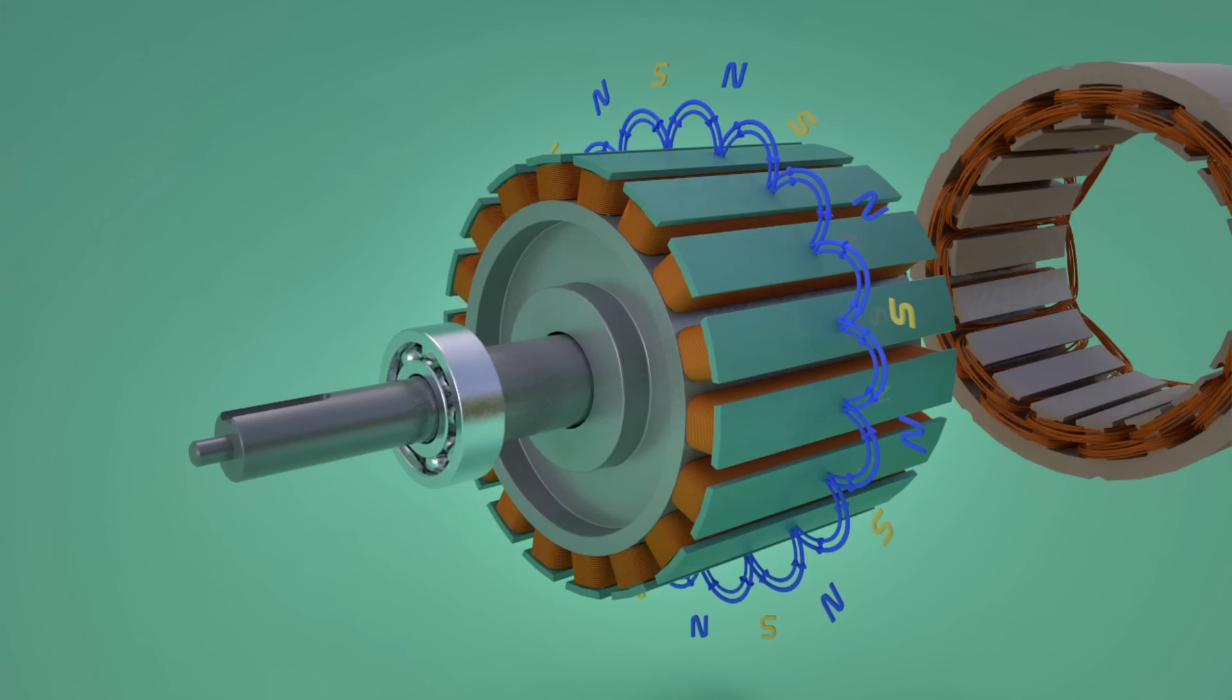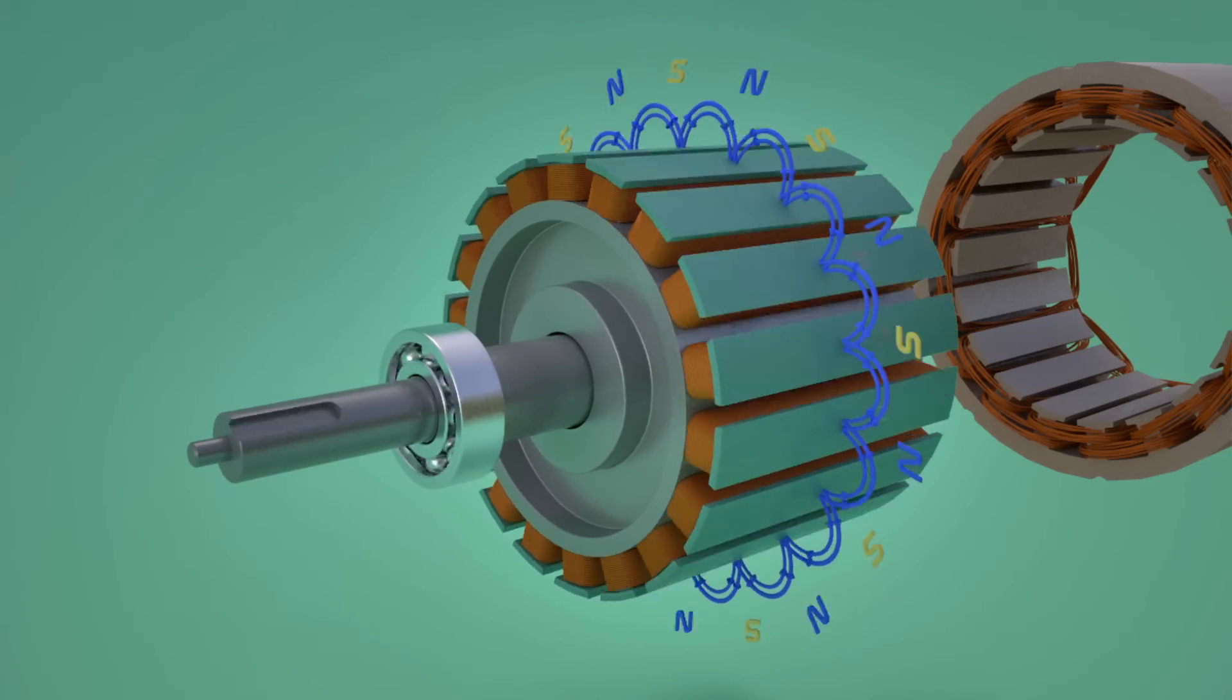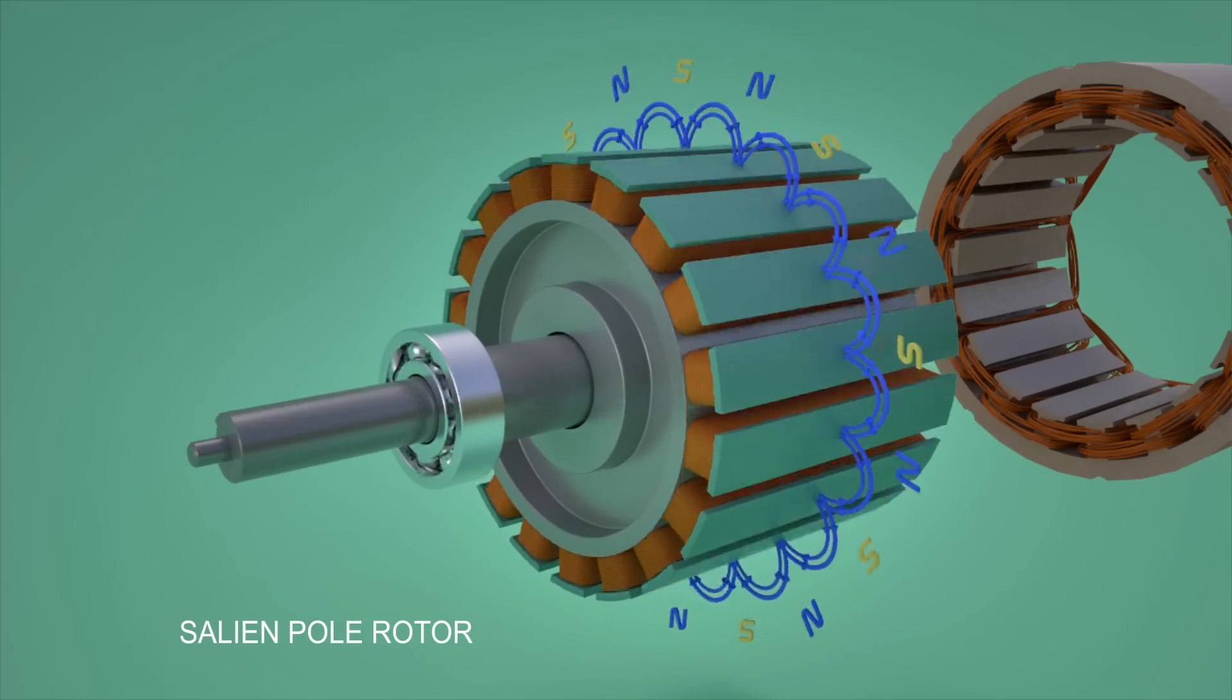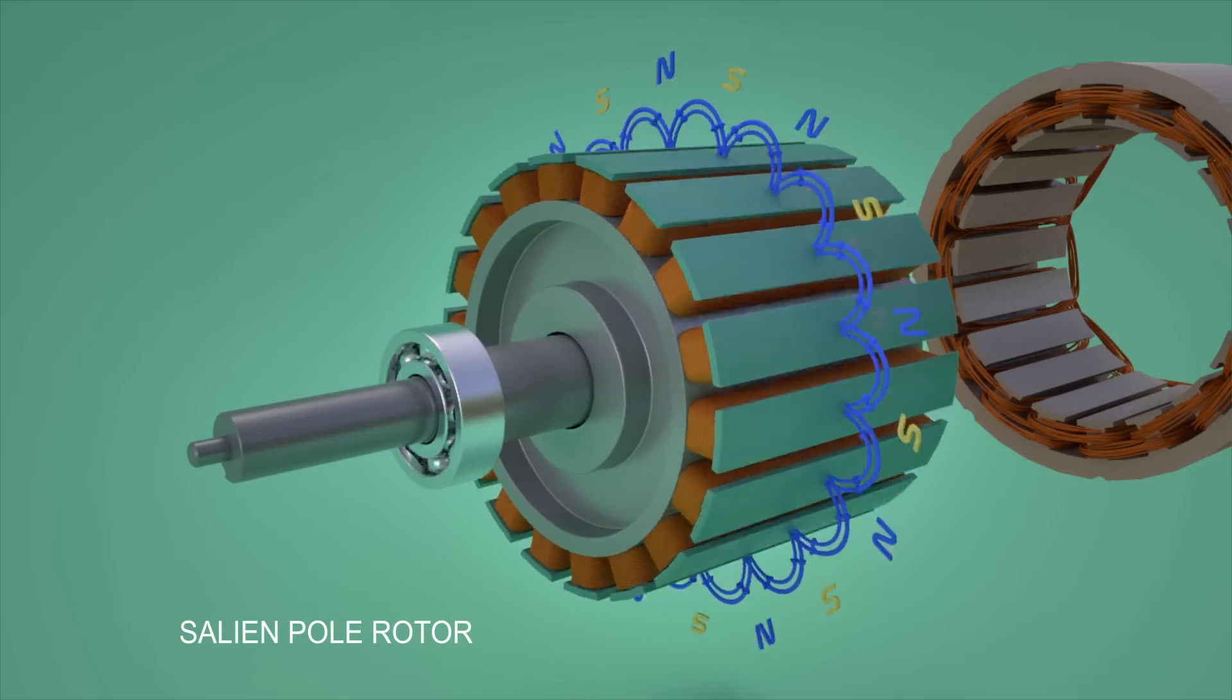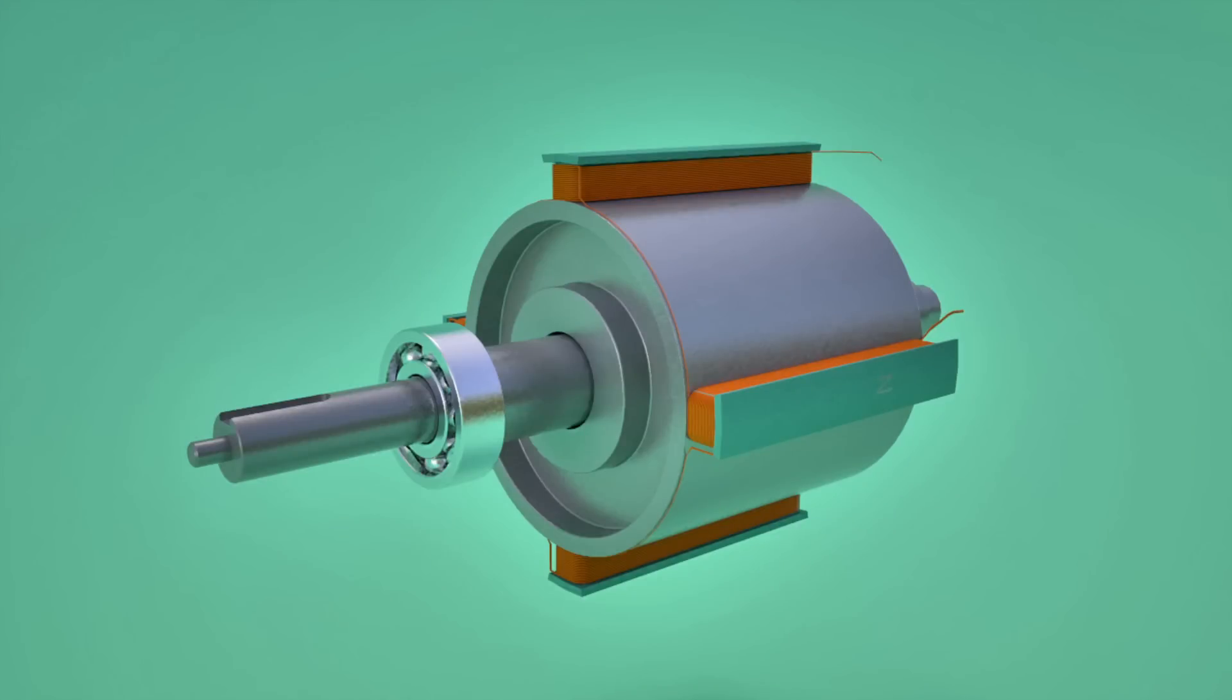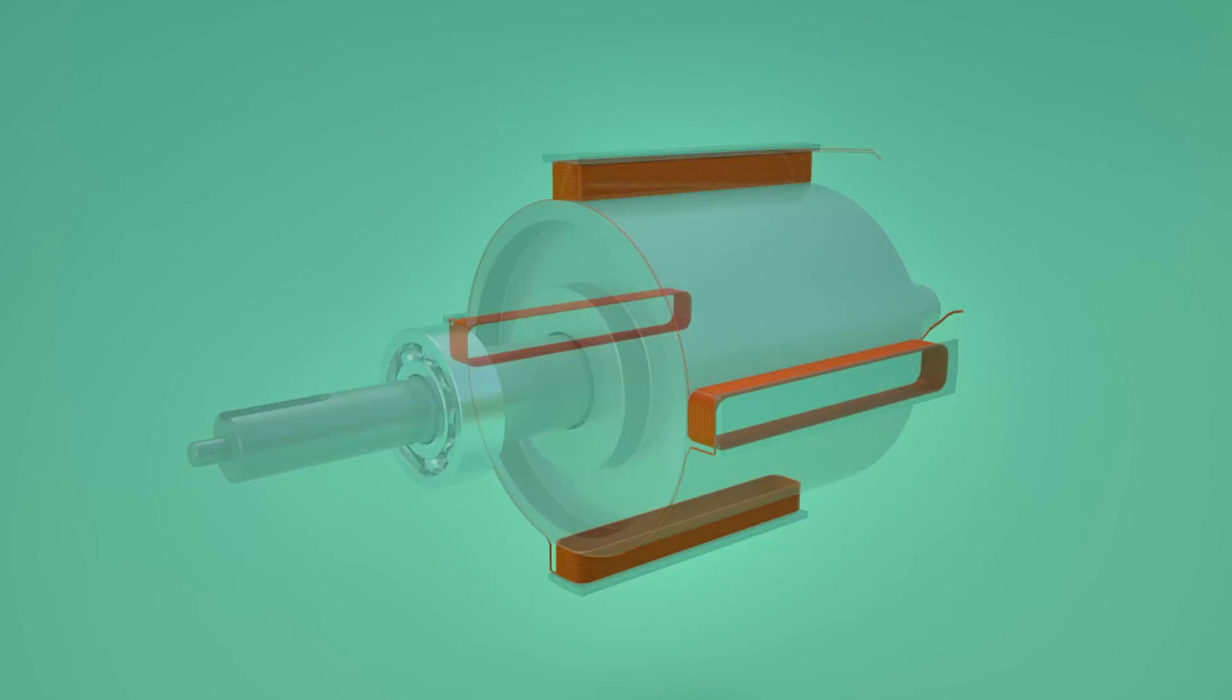Rotor produces a rotating magnetic field. Armature coils are stationary and rotating magnetic flux associated with the rotor induces electricity in the armature coils. The kind of rotor shown here is known as salient pole rotor. For gaining better insight of its working, let's consider a rotor with just four poles.